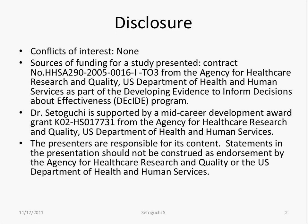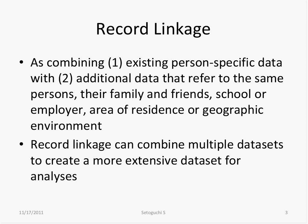Starting off with record linkage — this is what we're talking about today. Record linkage is defined as combining existing person-specific data with additional data that refer to the same person. Sometimes this includes family, friends, school, or other information — essentially identifying a person in one dataset and linking to information related to that person in other datasets. Record linkage can combine multiple datasets to create more extensive datasets for analysis.